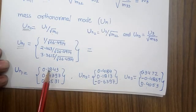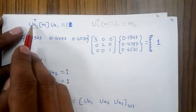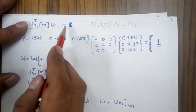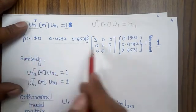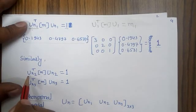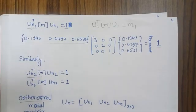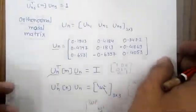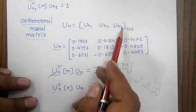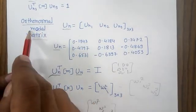The three orthonormal modes are calculated as 0.1943, 0.47, 0.56, and so on. If I multiply the orthonormalized normal mode with the mass matrix, I get unity. Similarly, multiplying the second orthonormal mode with the mass matrix also gives unity. Rearranging the three orthonormalized modes into a single matrix gives the orthonormal modal matrix.